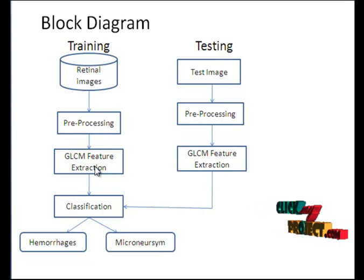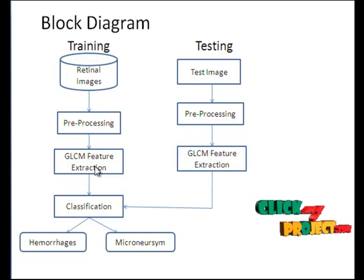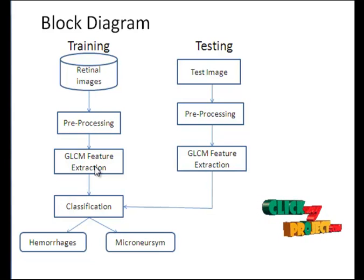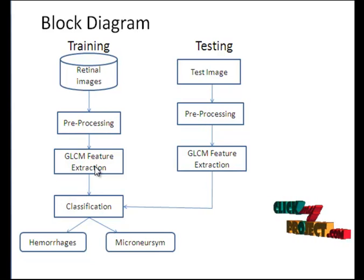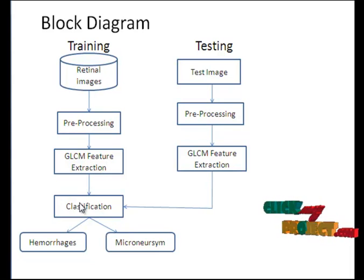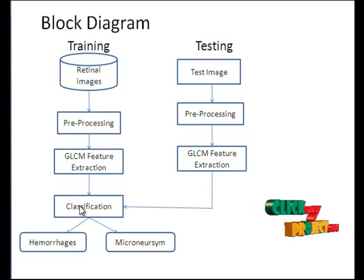The Gray Level Co-occurrence Matrix is an image analysis technique used to derive several statistical values using different formulas. Features such as energy, entropy, dissimilarity, contrast, and inverse difference are extracted using GLCM. The extracted feature values are then passed to the classification stage.